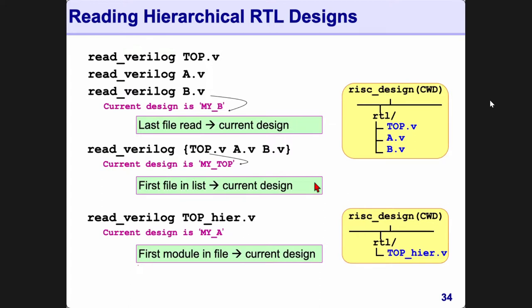When you have multiple Verilog files, you have several options for how you want to read them in. For example, you can read one file at a time. If they are in different directories you can just specify the path name. When you do this, understand that the last file that you read in is your current design, and that may not be what you want — you want 'top' to be your current design.